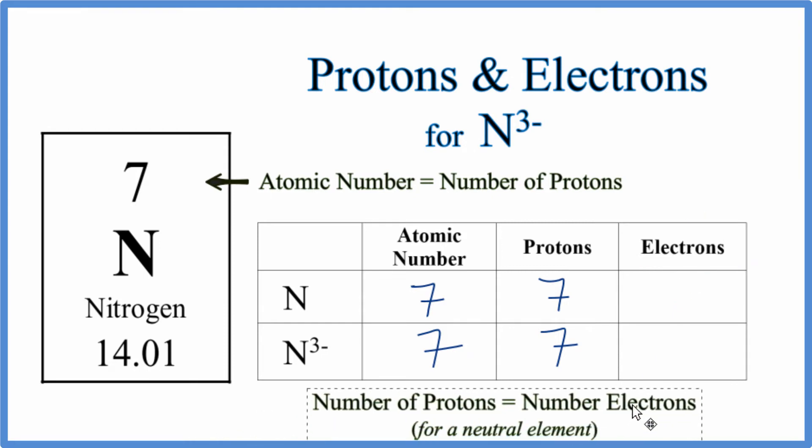For a neutral element, the number of protons equals the number of electrons. So we have seven protons and seven electrons.